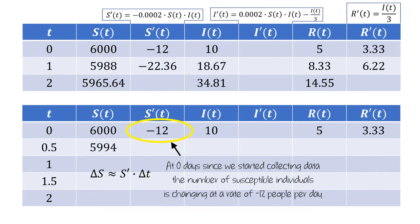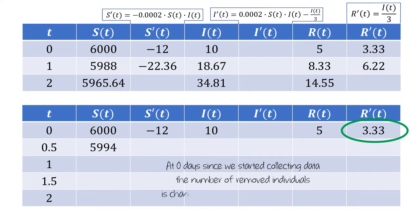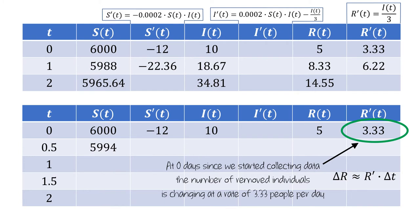Let's think about the values for the removed group and what r prime at time zero is telling us. This 3.33 means at zero days since we started collecting data, the number of removed individuals is changing at a rate of 3.33 people per day. So if r changes at a rate of 3.33 people per day for just a half day, then there should be half of 3.33, that is 1.67 more removed individuals at the end of the half day. In terms of our central relationship, r prime is 3.33 and delta t is a half day, so delta r is 1.67. And if we add 1.67 to 5, we'll get 6.67 individuals.